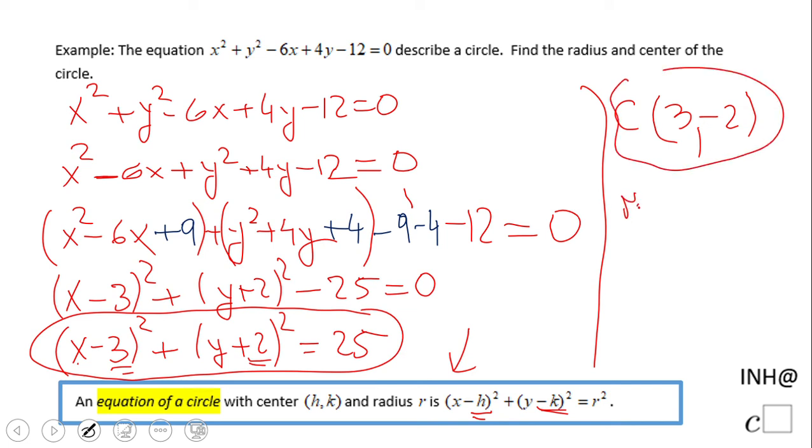And the radius, we're going to find the radius. We have this 25 here. The square root of 25, and that will be 5. And that's it.